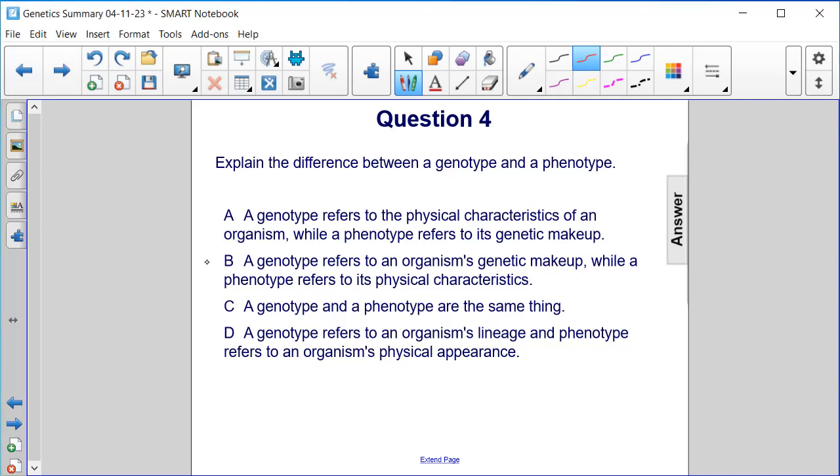The answer here is B. A genotype refers to an organism's genetic makeup, while a phenotype refers to its physical characteristics.